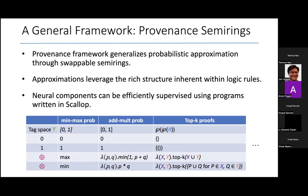I have shown you just three semirings here. The ones to the left are very cheap to compute because they associate with each tuple just a probability. We call these the min-max probability semiring and the add-mult probability semiring. What these semirings do is that they are approximating the probabilistic computation that I showed earlier by following the structure of the logic rules.